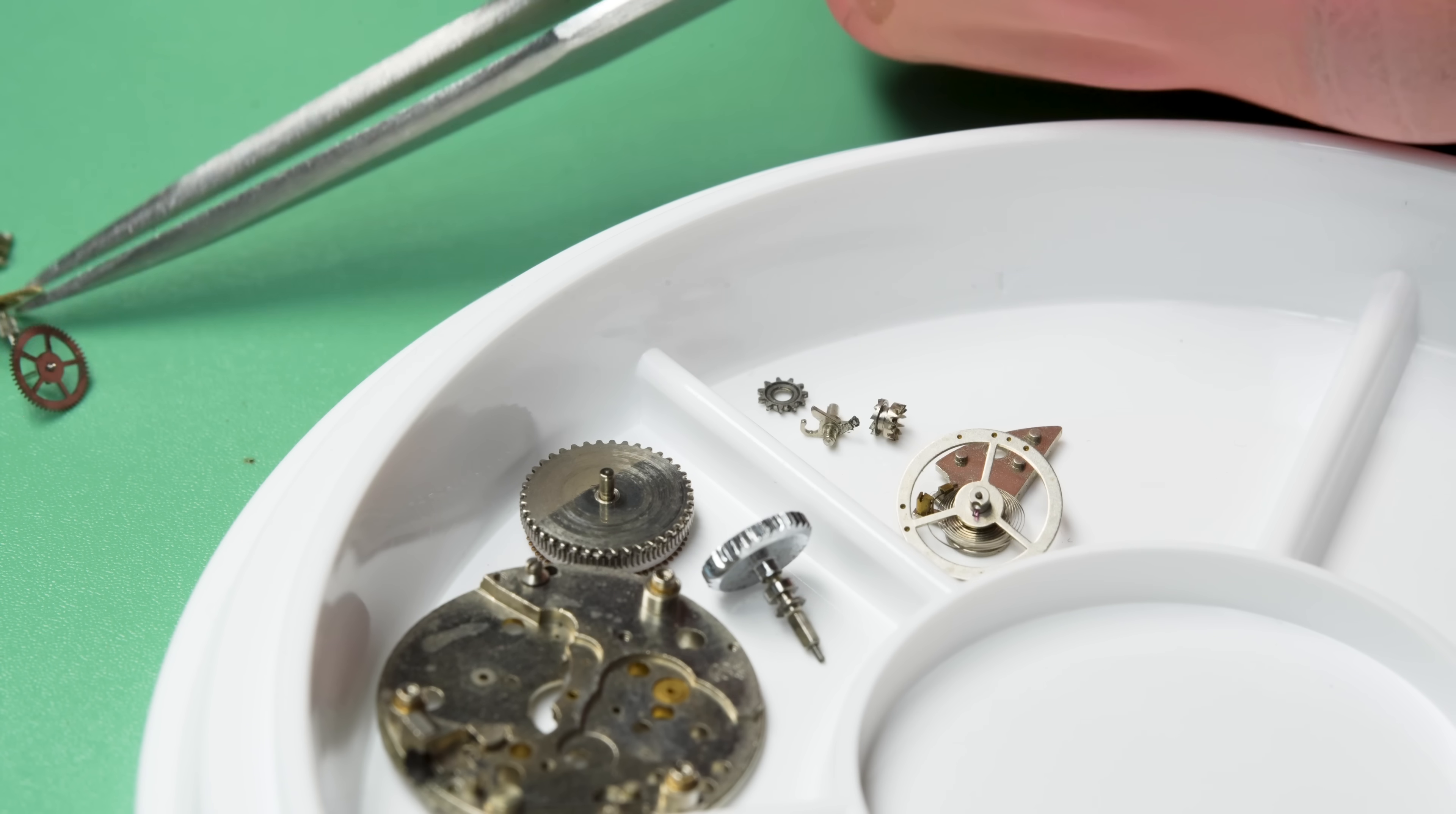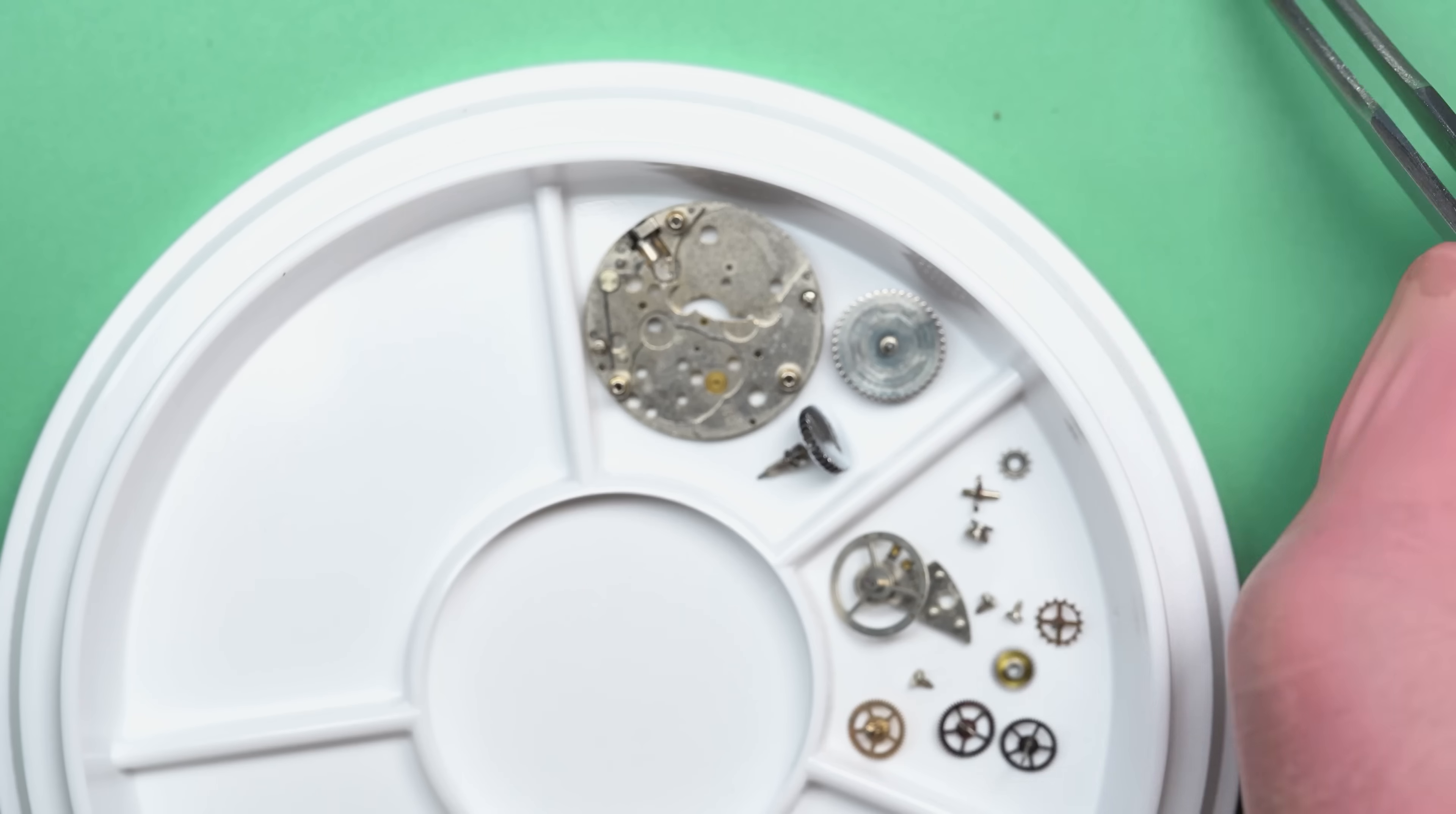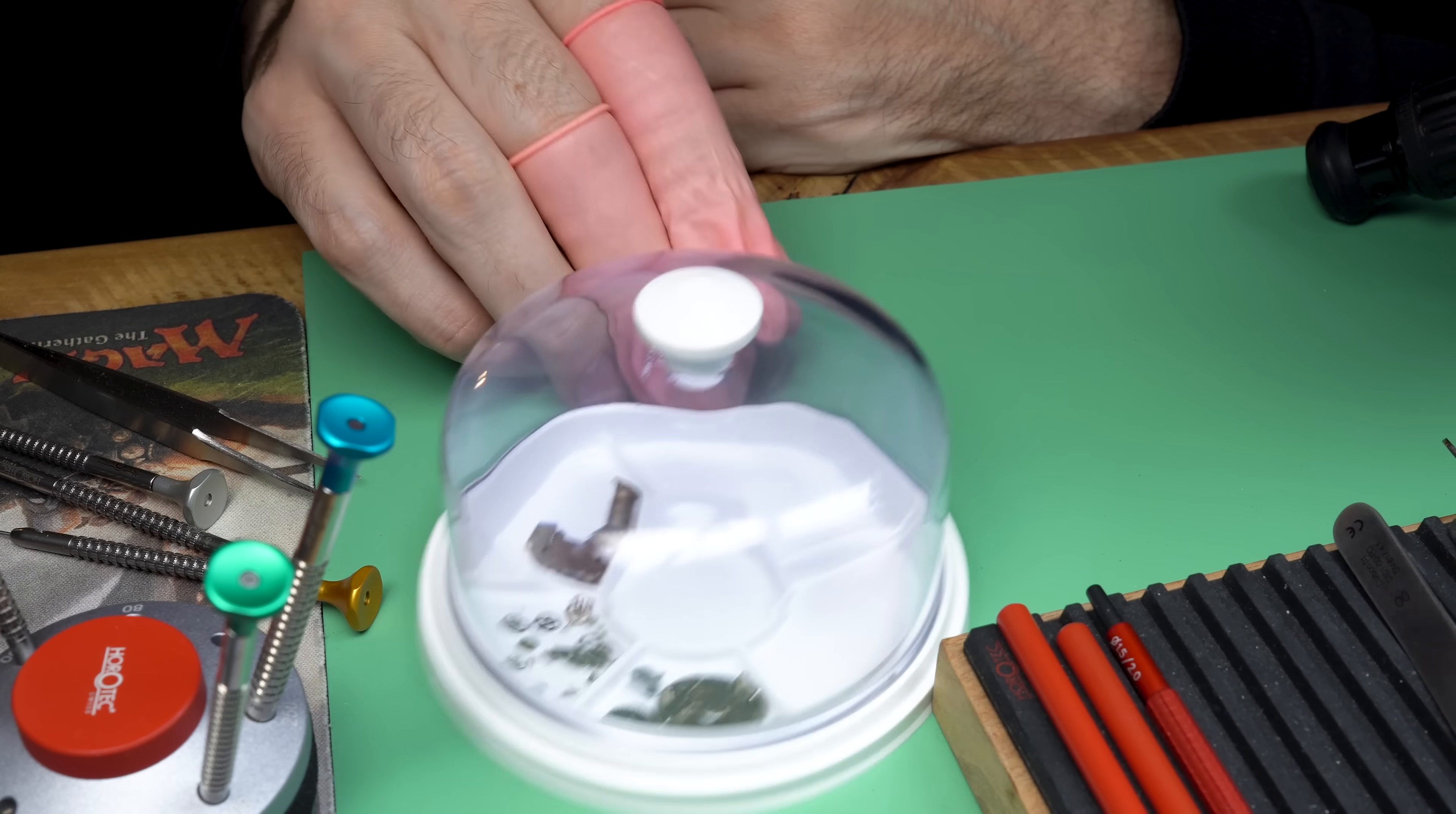This is about the most simple movement you could get. We're done like that. That was the disassembly process because there are so few parts. This is a no frills movement, but also it's made to be very cheap. So I'm just going to put everything in the tray here. I'm only going to use up a little part of it. And as you can see, we're all done with the disassembly.